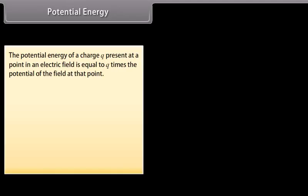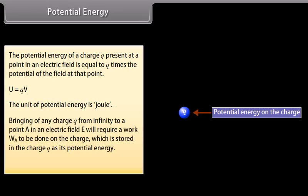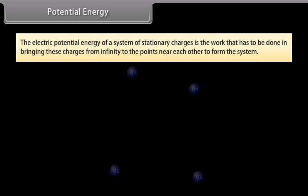Potential energy. The potential energy of a charge Q present at a point in an electric field is equal to Q times the potential of the field at that point: U equals QV. The unit of potential energy is joule. Bringing a charge Q from infinity to point A in an electric field E requires work W_A to be done, which is stored as the potential energy U_A equals QV_A. The electric potential energy of a system of stationary charges is the work done in bringing these charges from infinity to their positions to form the system.